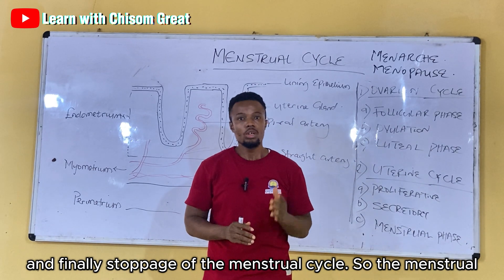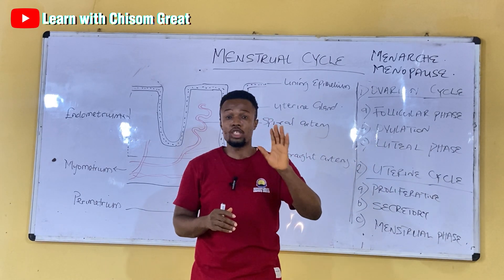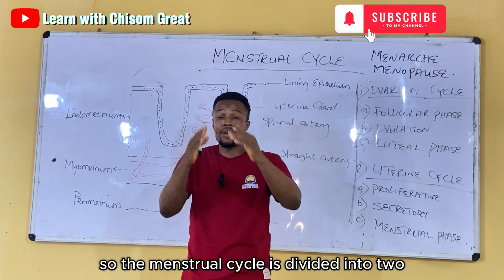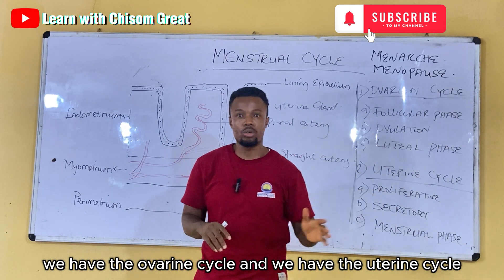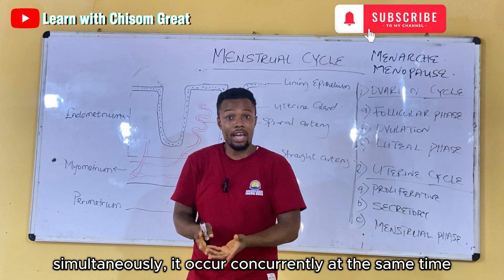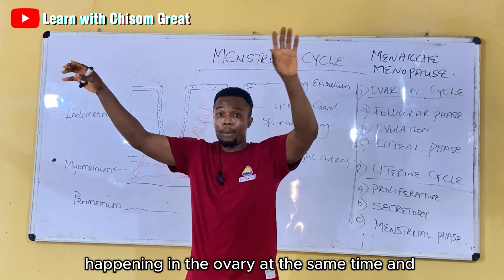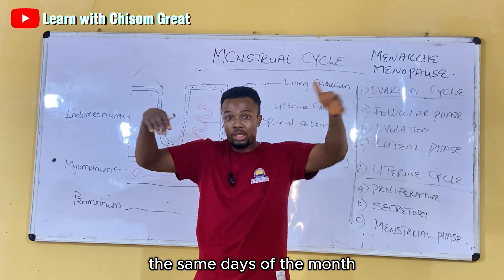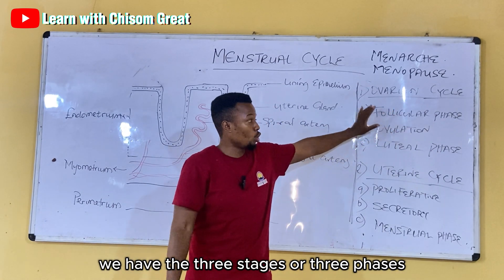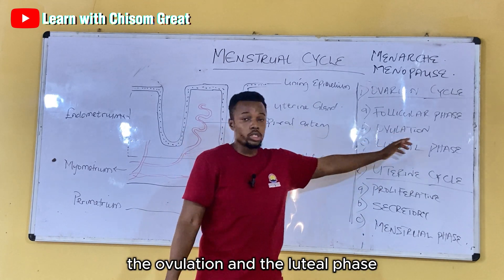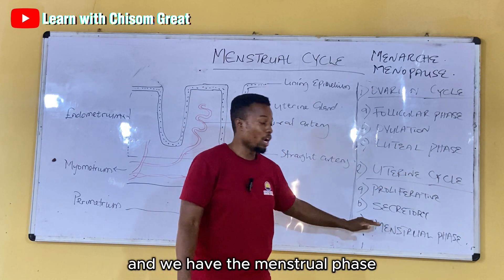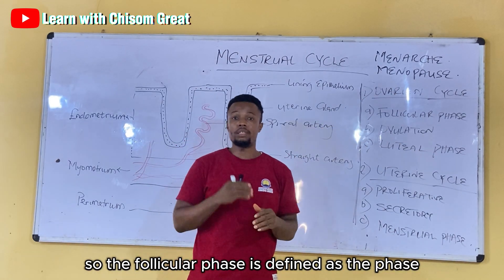The menstrual cycle is divided into two parts: the ovarian cycle and the uterine cycle, both of which occur simultaneously and concurrently. In the ovarian cycle, we have three phases: the follicular phase, ovulation, and the luteal phase. In the uterine cycle, we have the proliferative phase, the secretory phase, and the menstrual phase.